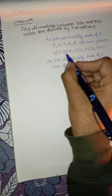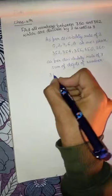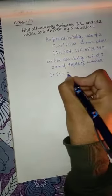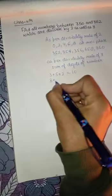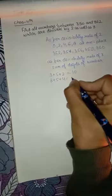We add the digits of these numbers. 3 plus 5 plus 2 equals 10. 3 plus 5 plus 4 equals 12.